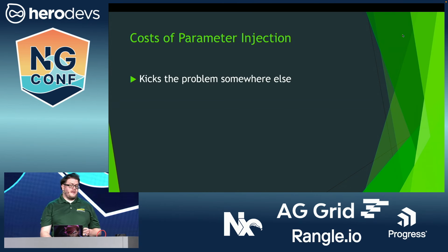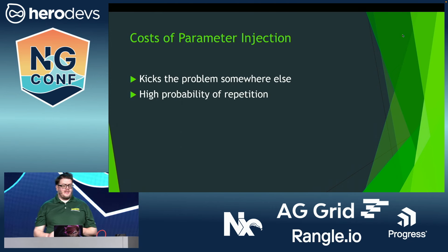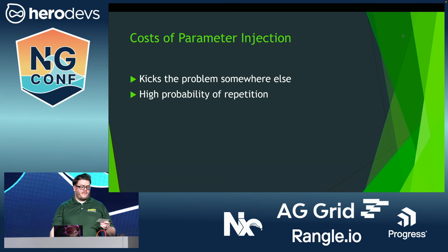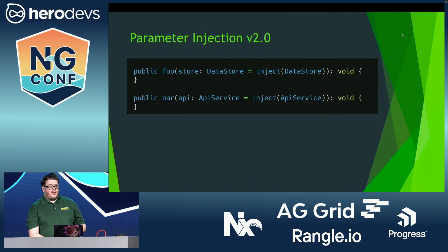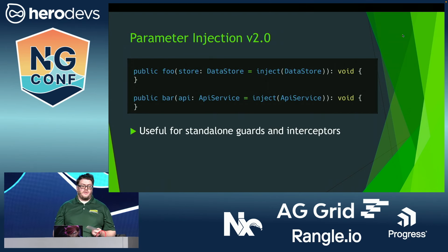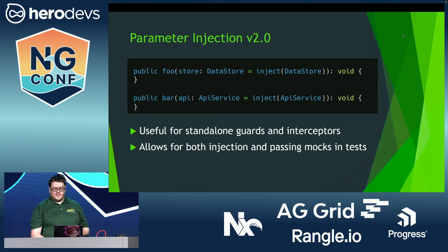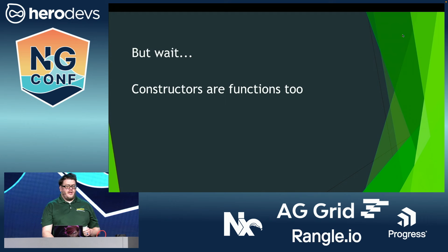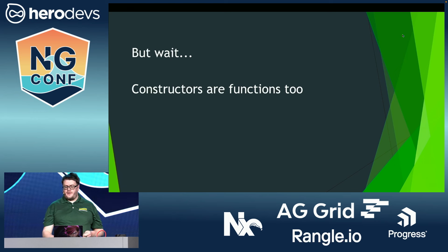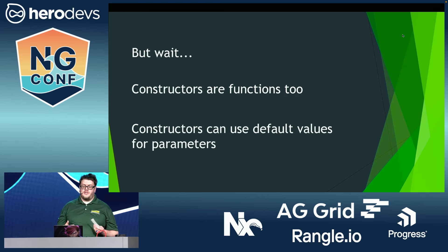The other problem is that this code isn't necessarily DRY. If multiple functions in the same class have the same dependency, the parameter has to be copy-pasted into each one. However, that style could — apart from the requirement to be run in an injection context — actually look like this. As it turns out, this pattern ends up being really useful when it comes to standalone guards and interceptors. Notice that the injection parameters have a default value that uses the inject function. That means that tests can still provide a stub value for that parameter, but real code can just ignore it and let the dependency injection container take over. It still has the problem of parameter duplication, of course, but remember that constructors are just functions. They even intrinsically run in an injection context — functions with a special name, to be sure, but still just a function. That means that their parameters can have default values too. It's just not something that we're used to doing in Angular.